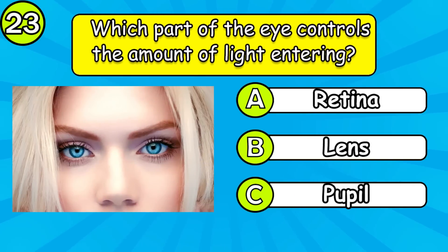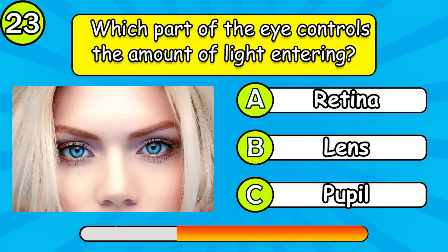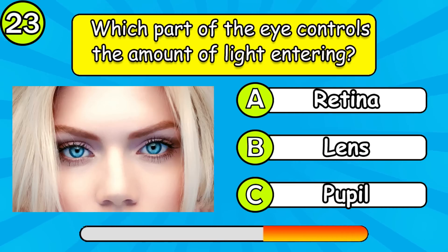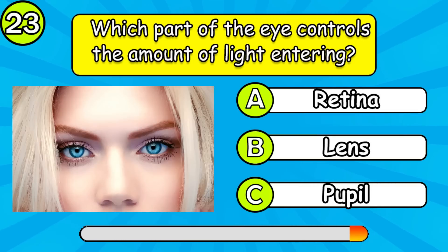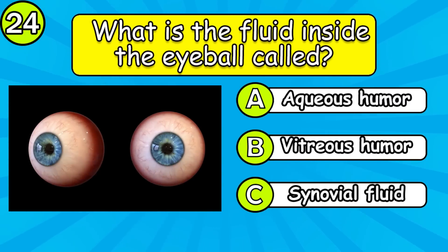Which part of the eye controls the amount of light entering? What is the fluid inside the eyeball called?